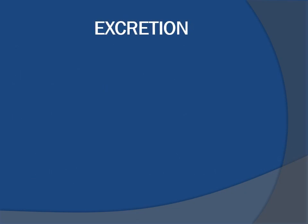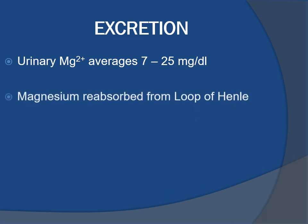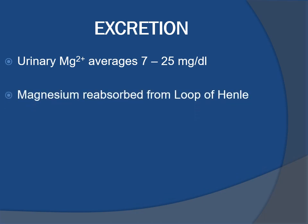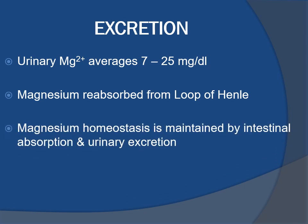Excretion of magnesium: it is mainly excreted in the urine, and urinary magnesium averages 7 to 25 milligrams per deciliter. Magnesium is reabsorbed from the loop of Henle. Magnesium homeostasis is maintained by intestinal absorption and urinary excretion.